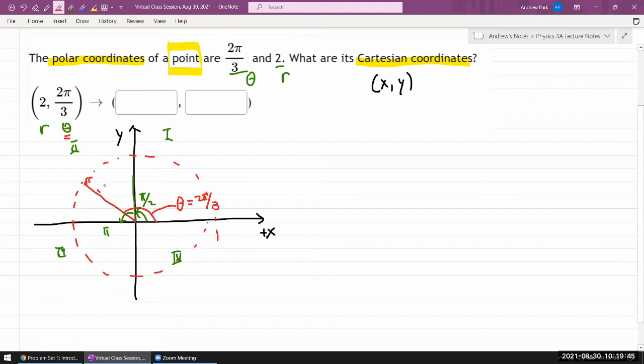And r refers to this red quote-unquote radius, because we are imagining there being a circle that these points are all on. And r refers to this distance from the origin.